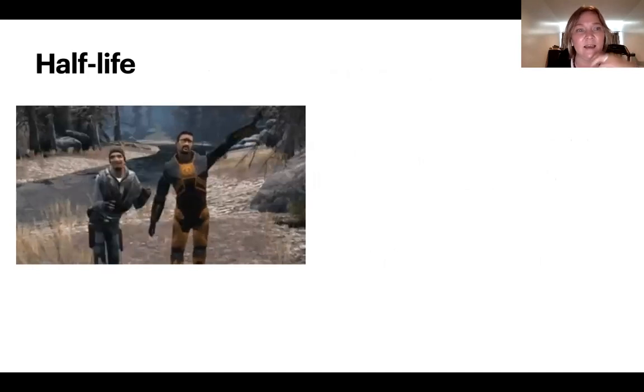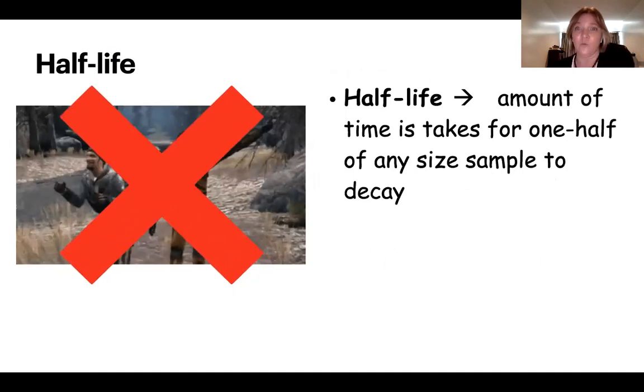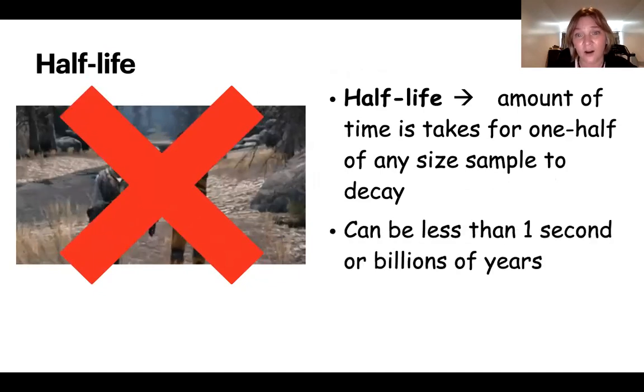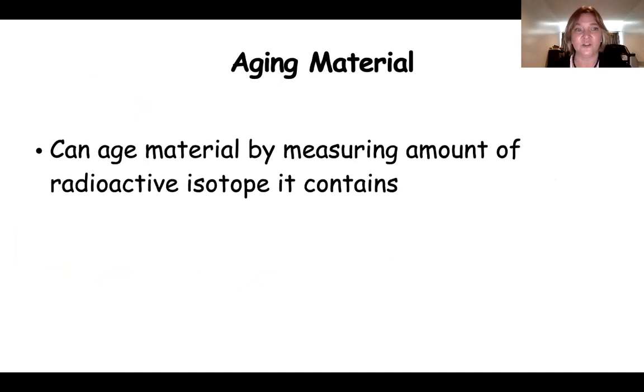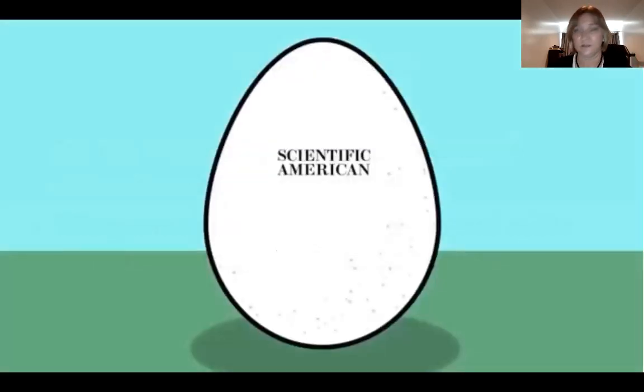We have something called half-life. It is the amount of time it takes for one half of any size sample to decay. It could be less than a second or up to billions of years depending on the isotope. We can age material by measuring the amount of radioactive isotope it contains and compare that to its half-life. This quantity is compared with an amount of another substance in a fossil that remains constant.